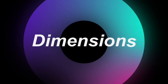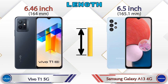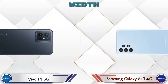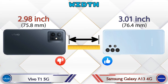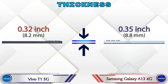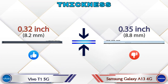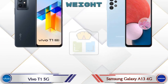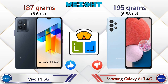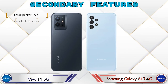Now let's check the dimensions. The length of the T1 5G is 6.46 inches and the Galaxy A13 4G is 6.5 inches. Width: T1 5G is 2.98 inches and Galaxy A13 4G is 3.01 inches. Thickness: T1 5G is 0.32 inches and Galaxy A13 4G is 0.35 inches, which is thicker than the T1 5G. Weight: T1 5G is 187 grams and Galaxy A13 4G is 195 grams, which is heavier than the T1 5G.